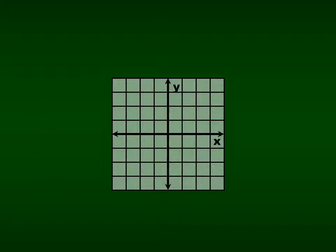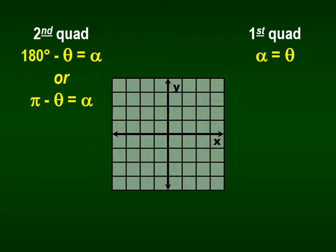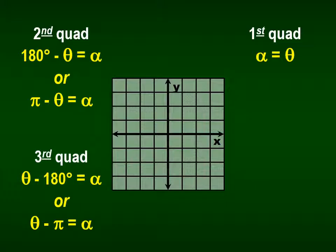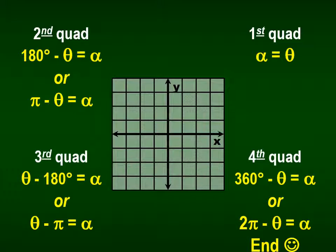Here's how to find reference angles by quadrant. In the first quadrant, the reference angle is the angle you're given. In the second quadrant, the reference angle is 180 minus the given angle; in radians, it's pi minus the given angle. In the third quadrant, subtract 180 from the given angle; in radians, subtract pi. In the fourth quadrant, do 360 degrees minus the given angle; in radians, do 2 pi minus the given angle.